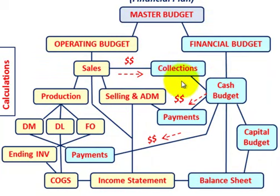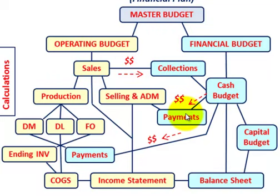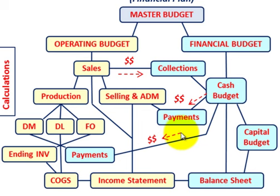With the cash budget, you're going to have collections coming in from sales, and then payments going out for selling and administration costs, and other payments for all the production operations — materials, labor, factory overhead, and so forth. That's how the financial budget is broken down between these three different budgets.